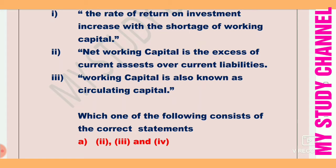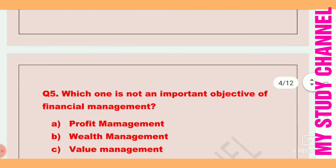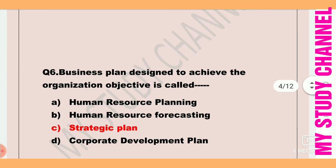Next question: A business plan designed to achieve the organization's objective is called — option A is human resource planning, B is human resource forecasting, C is strategic plan, and D is corporate development plan. The answer is option C — strategic plan.